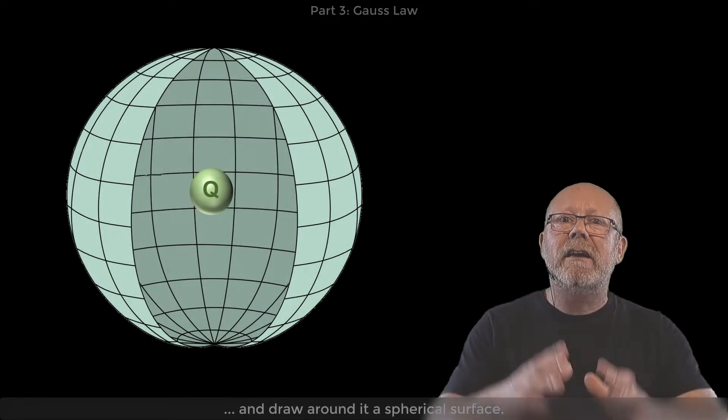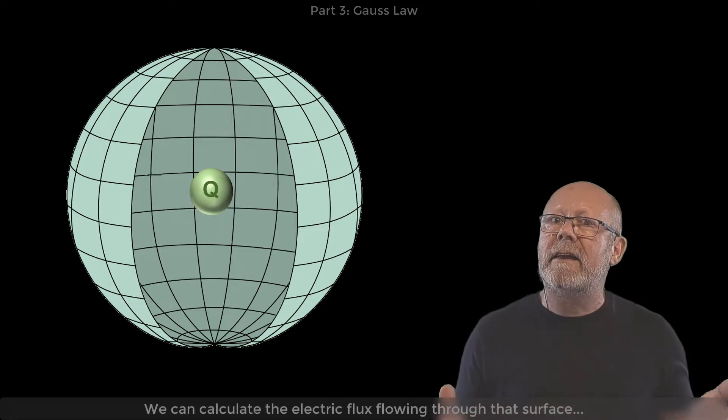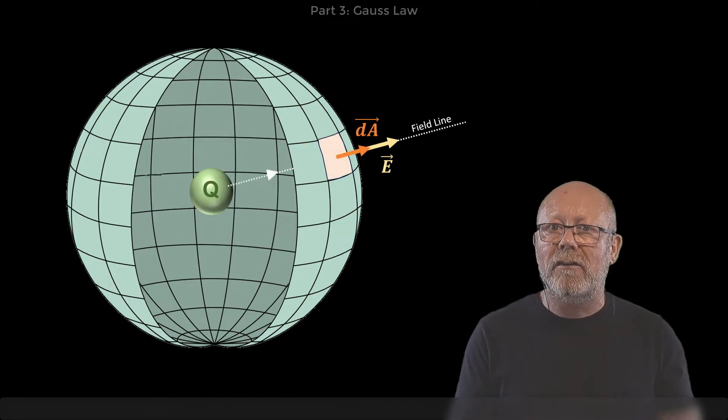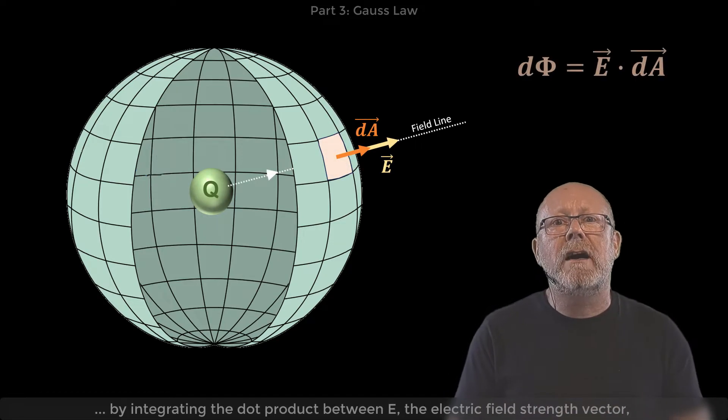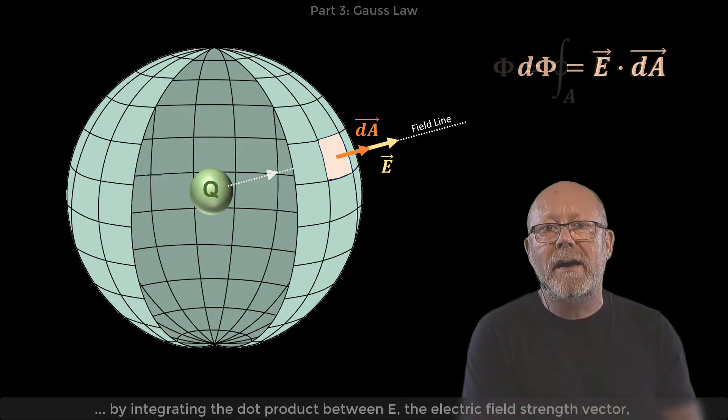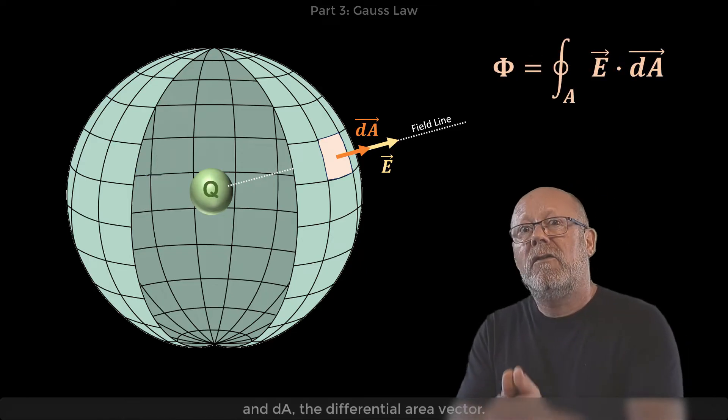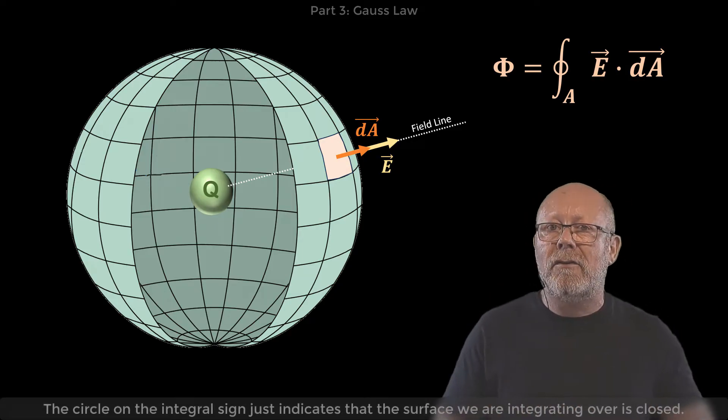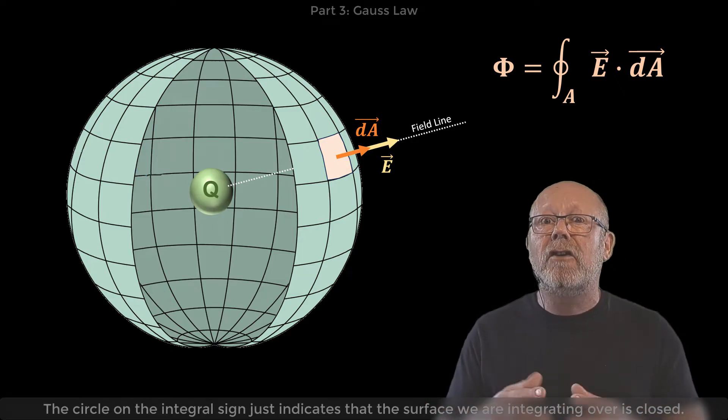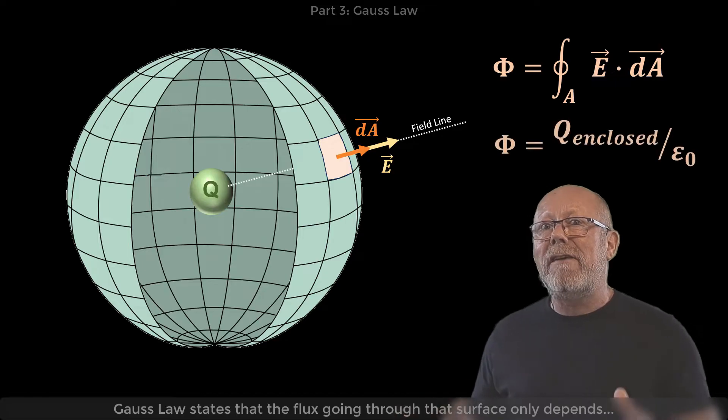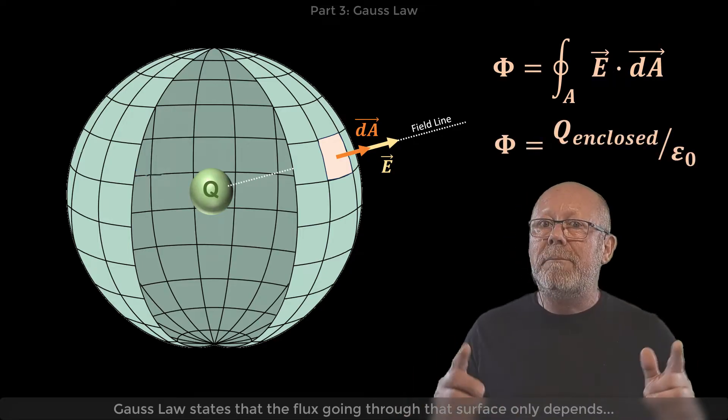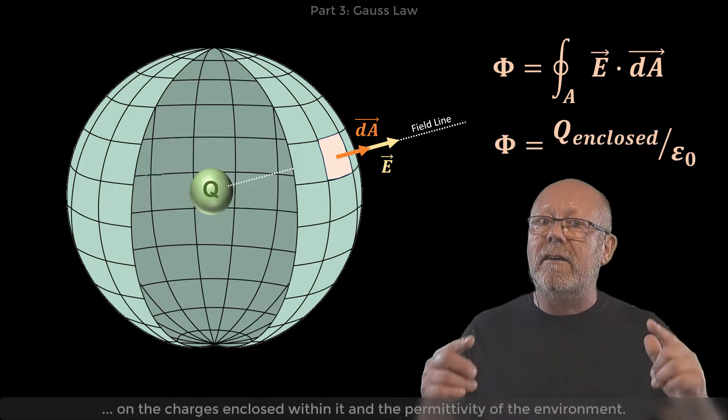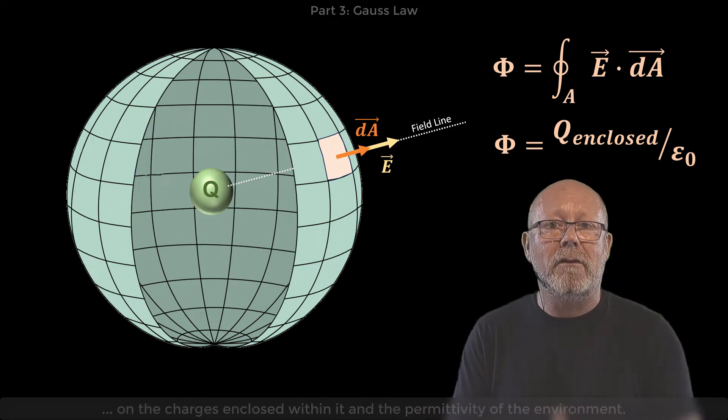Let's go back to the charge Q and draw around it a spherical surface. We can calculate the electric flux passing through that surface by integrating the dot product between E, the electric field strength vector, and dA, the differential area vector. The circle on the integral sign just indicates that the surface we're integrating over is closed. Gauss's law states that the flux passing through that surface only depends on the charges enclosed within it and the permittivity of the environment, here vacuum.